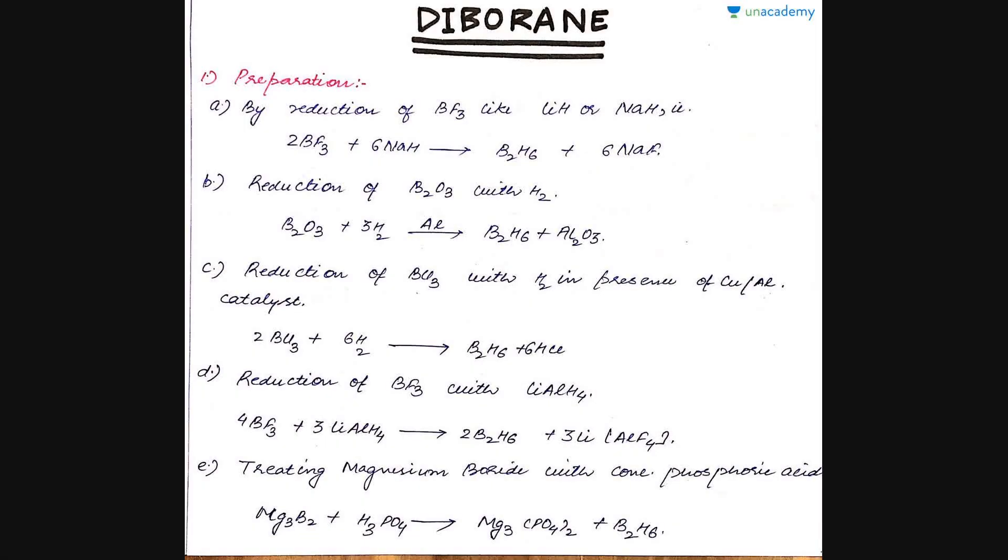Next we are going to start with the first compound of boron: diborane. Diborane is the hydride of boron with a general formula of B2H6. First, we will study the preparation of diborane. It is formed by the reduction of BF3 with reducing agents like lithium hydride or sodium hydrides. The reaction gives B2H6 plus the metal fluoride is left behind.